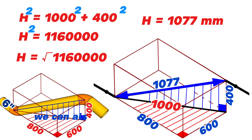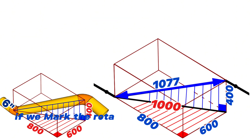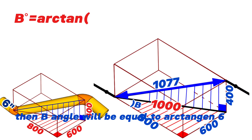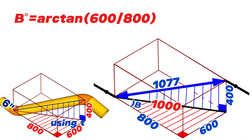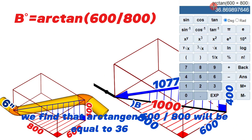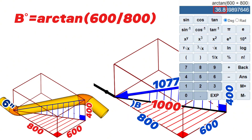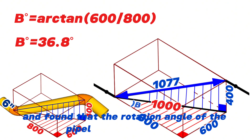In this pipe drawing we can also calculate the degree of rotation of the pipeline. If we mark the rotation angle with the letter B, then angle B equals arctangent of 600 divided by 800. Using the scientific calculator, we find that arctangent of 600 divided by 800 equals 36.8 degrees. So the rotation angle of the pipeline is 36.8 degrees.